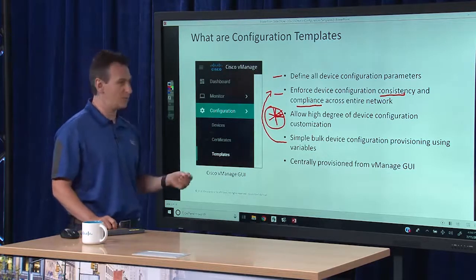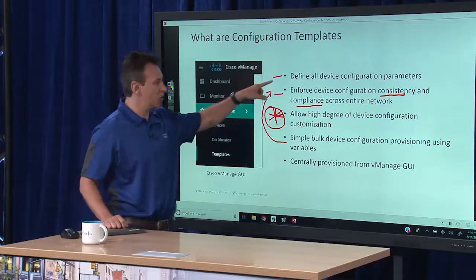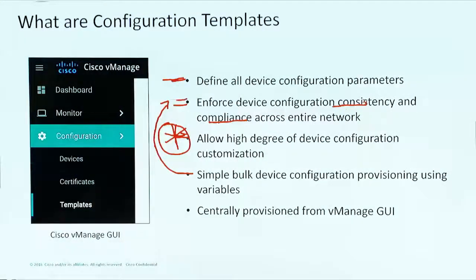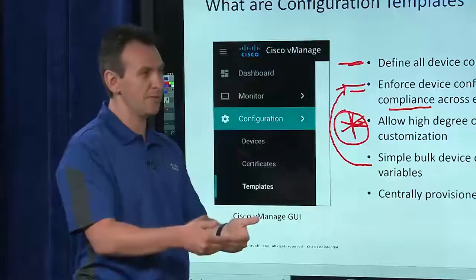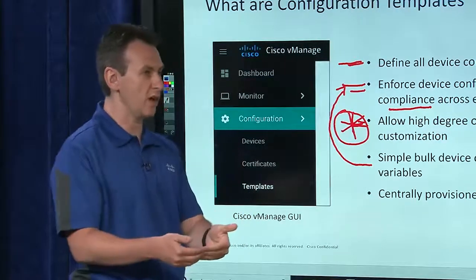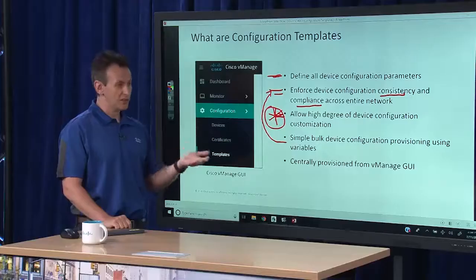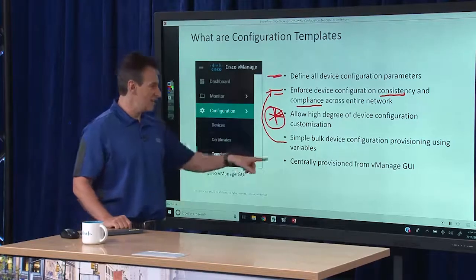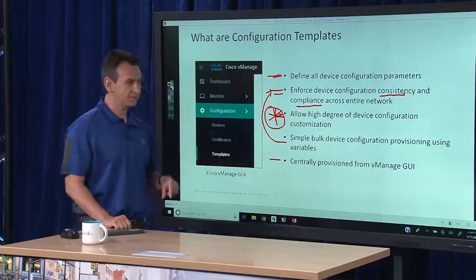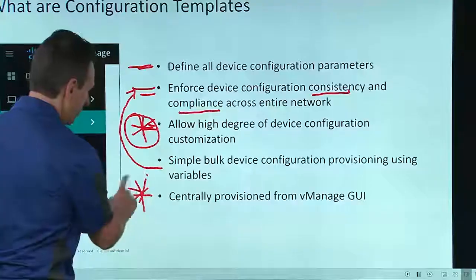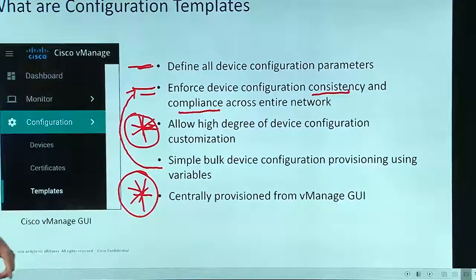You want to make sure you are defining this holistically for the entire network, yet have the ability to drill down to the individual device level and enforce configuration consistency on a per-device basis as well. Another very important operational element is the provisioning piece — specifically, centrally provisioned configuration templates from the vManage graphical user interface.